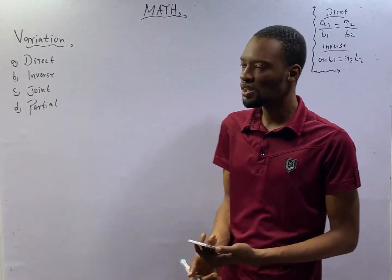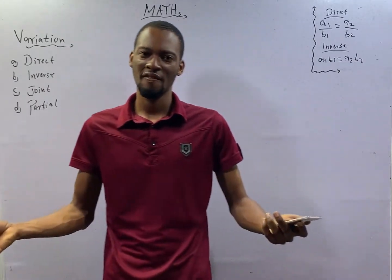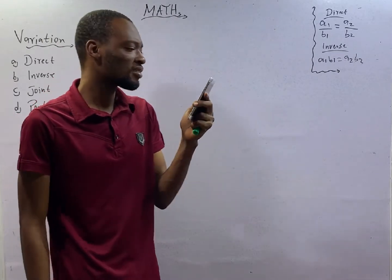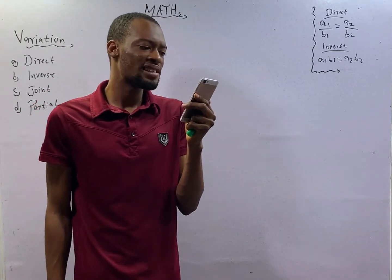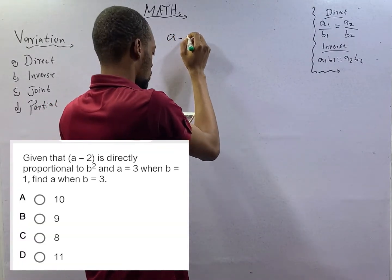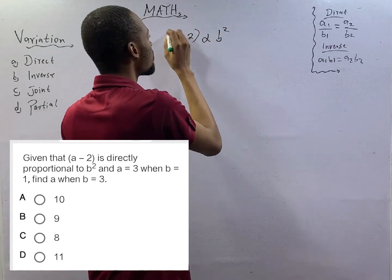Feel free to reach out to me for questions, enquiries, suggestions and testimony. Here I see is given that (a - 2) is directly proportional to b squared. So (a - 2) is directly proportional to b squared.